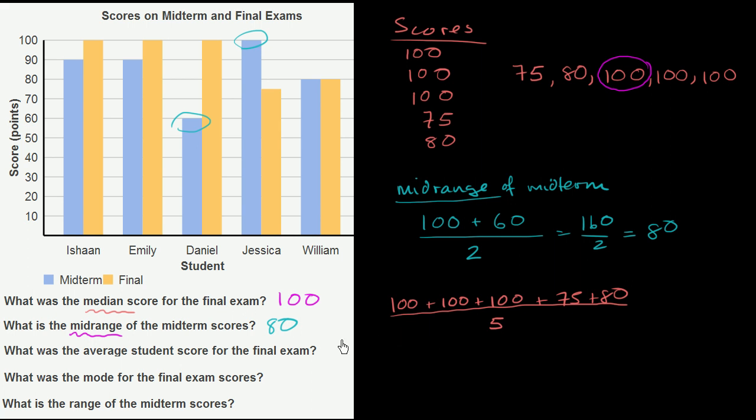That'll give us our average. When someone says average without more information, they're talking about the arithmetic mean. This is 300 plus another 155, which equals 455 over 5.